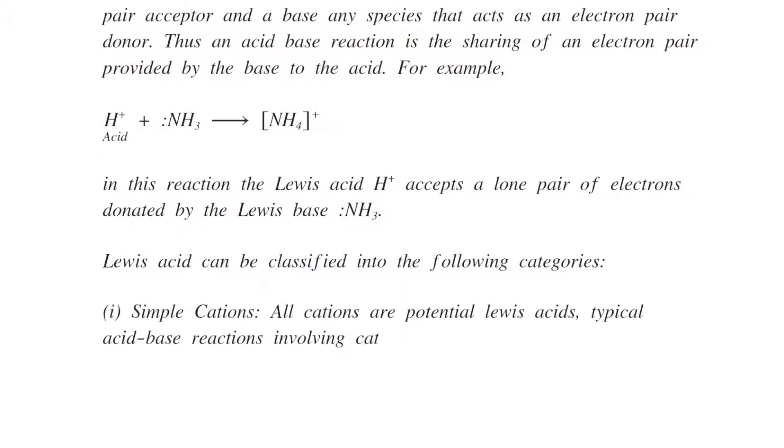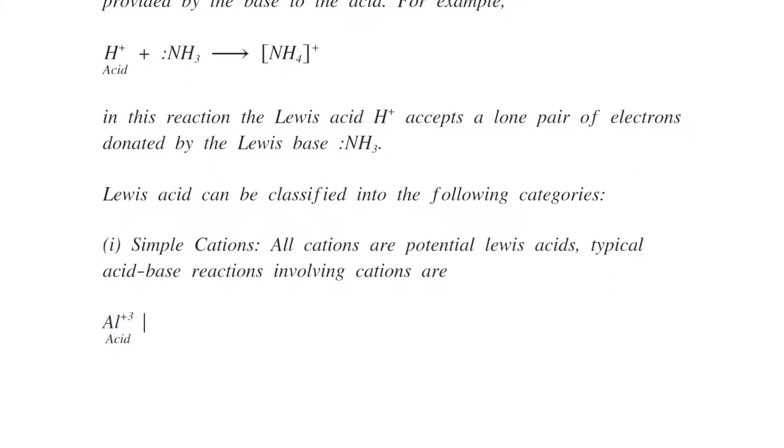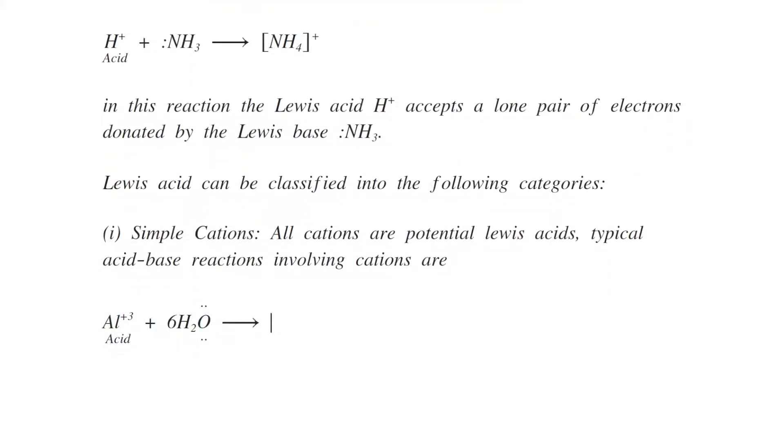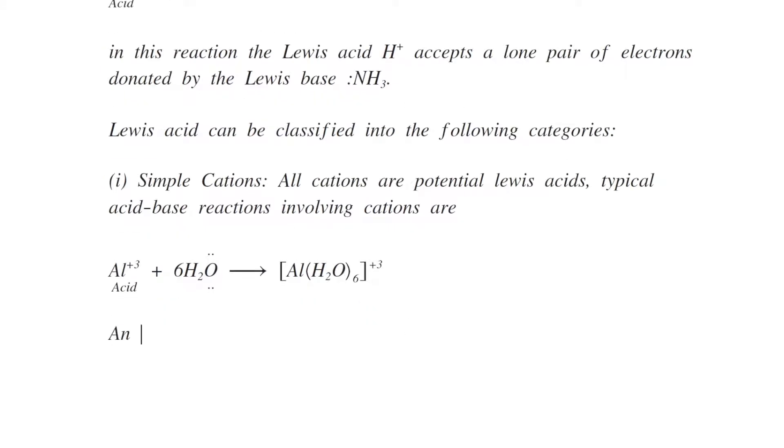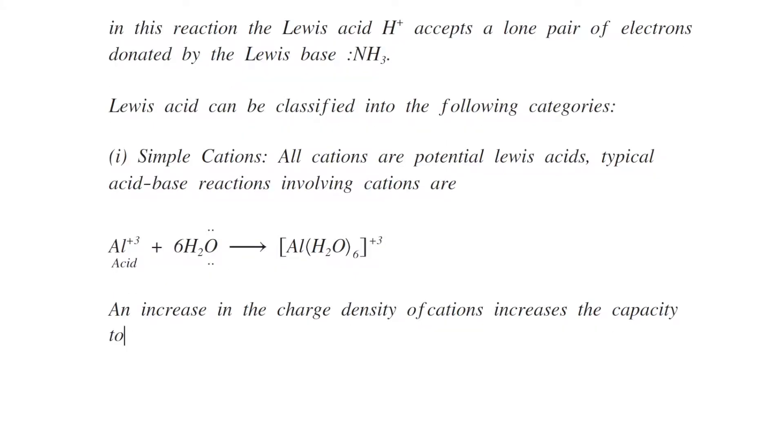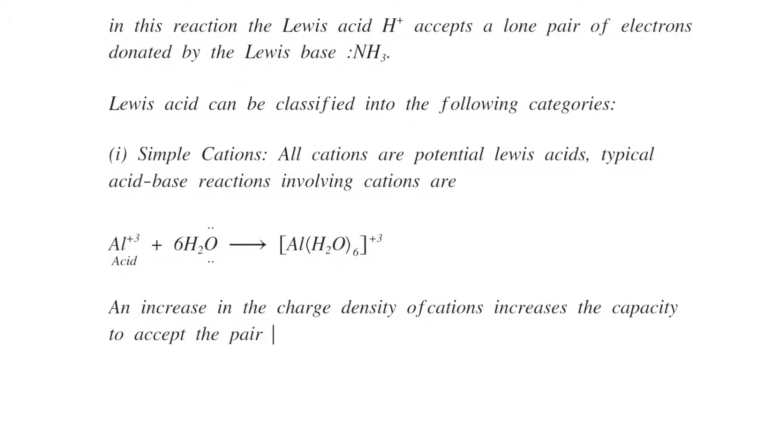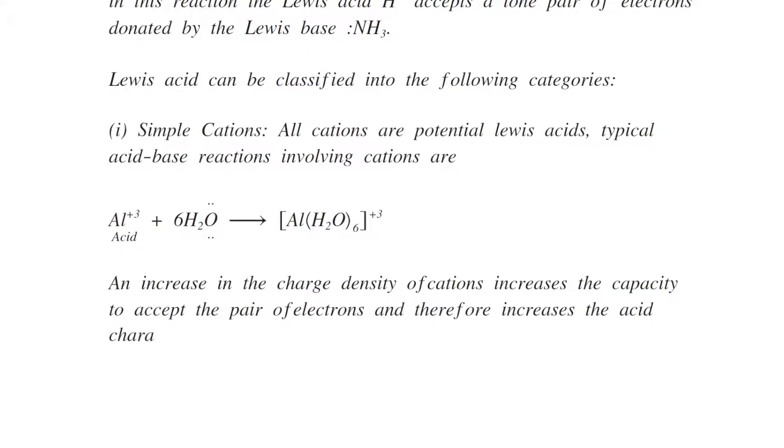Typical acid base reactions involving cations are aluminum plus 3 reacts with 6 moles of water producing aluminum 6H₂O plus 3. An increase in charge density of cations increases the capacity to accept the pair of electrons and therefore increases the acid character. Therefore the more the number of positive charges will make the cations more stronger acid.